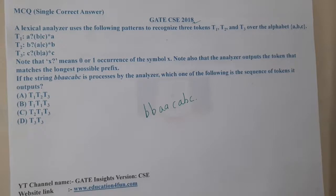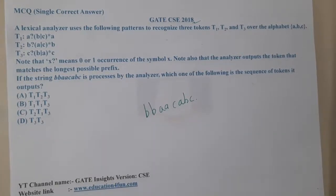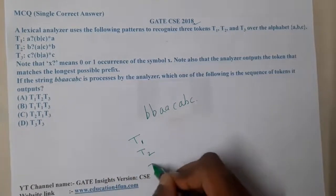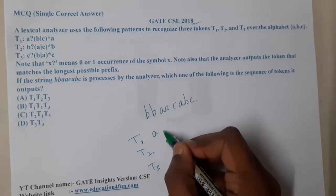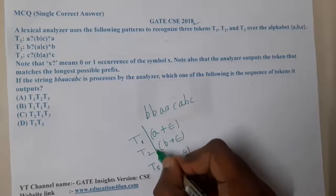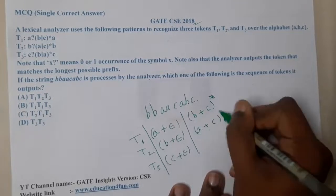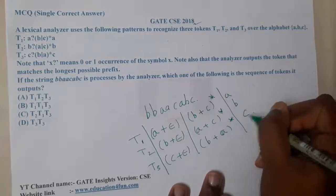The notation uses 'x?' to mean zero or one occurrence of x. So instead of traditional regular expressions, they wrote it this way just to confuse us. So 'a?' means 'a or epsilon', similarly 'b?' means 'b or epsilon', and 'c?' means 'c or epsilon'. The patterns expand to things like (a|b|c)* forms.